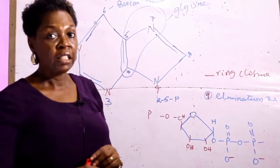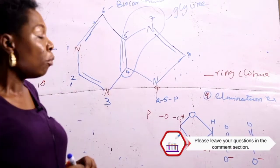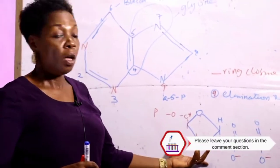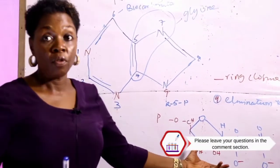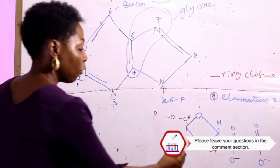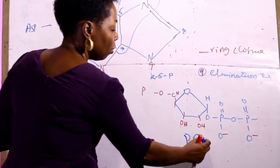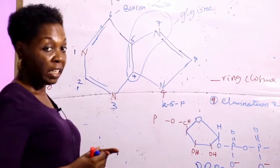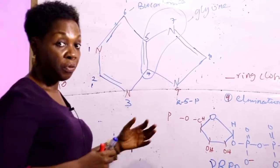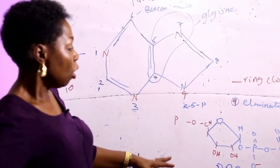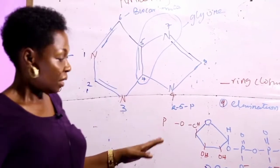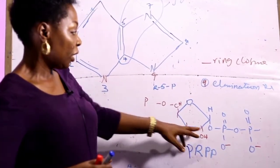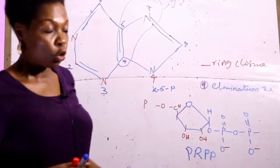The first step is the activation of the ribose sugar. Activation involves the phosphorylation of the ribose sugar — the addition of a phosphate group — to give us phosphoribosyl pyrophosphate, or what we call PRPP. This is an activated sugar and is the first reaction involved in the synthesis of the purine nucleotide. So the formation of PRPP is the phosphorylation of the sugar molecule.